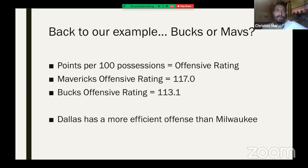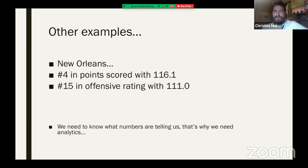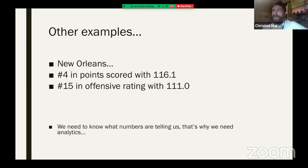This is how we make a metric comparable. New Orleans is fourth in points scored but 15th in offensive rating — this is why we need analytics. If you're scouting a team and you see they score 116 points and rank fourth in the league, you'd think they have a great offense. But if you don't calculate the offensive rating, you won't have the whole truth. That team is actually 15th — right in the middle of the pack. It can also go the other way: a team that looks average in scoring can be a highly efficient team.